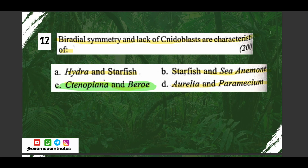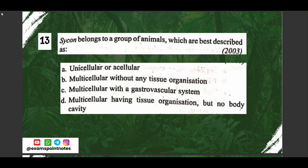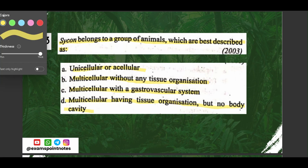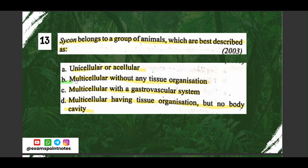Question number thirteen: sponge belongs to a group of animals best described as — A) unicellular or acellular, B) multicellular without any tissue organization, C) multicellular with a gastrovascular system, D) multicellular having tissue organization but no body cavity. The correct option is option B, multicellular without any tissue organization.